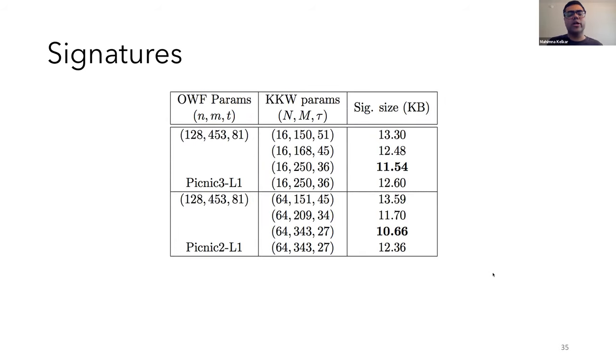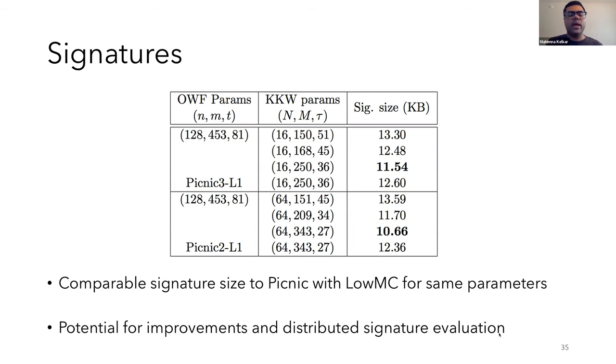We compare the signature sizes when using our 2-3 one-way function versus LowMC, which is used in standard Picnic. And for the same parameters, we can see that the signature sizes are quite comparable. In fact, they're slightly smaller across the board using our one-way function. So for example, for 128-bit security for the same Picnic parameters, our one-way function has signature size 10.66 kilobytes versus 12.36 kilobytes when using LowMC. Another benefit is that using our one-way functions, we could have potentially much better communication for distributed signature evaluation. Since now, you have many different parties computing the signature jointly. So here, using LowMC will result in a lot of rounds of communication since it has a high depth. But our 2-3 one-way function will require much lesser communication.